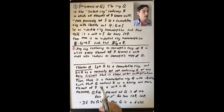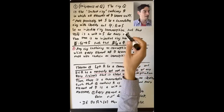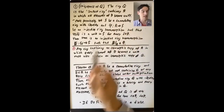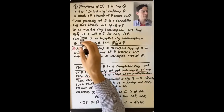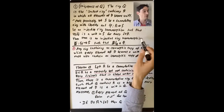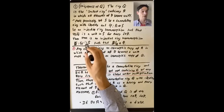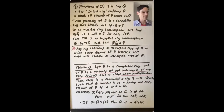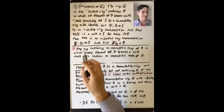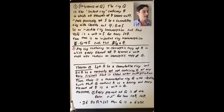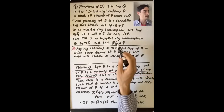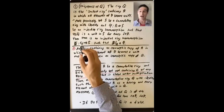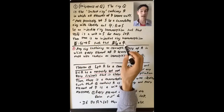S is some ring containing R in which all elements of D become units. The statement is that there is an injective ring homomorphism capital Psi from Q to S such that if you take this injective ring homomorphism and restrict it to the isomorphic copy of R inside of Q, you get phi.